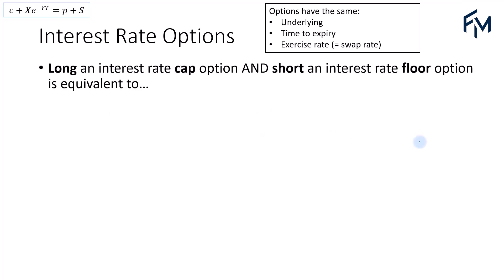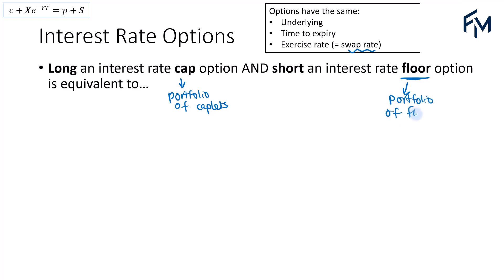Next, what if we long an interest rate cap option and short an interest rate floor option? Here the exercise rate for the cap and floor would be set equal to the swap rate. Caps would be a portfolio of caplets, and caplets are interest rate call options. A floor is a portfolio of floorlets, and each floorlet is an interest rate put option.